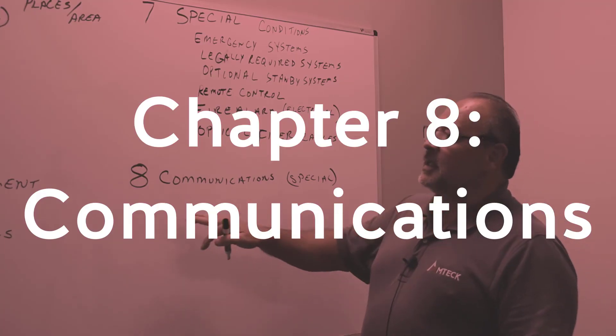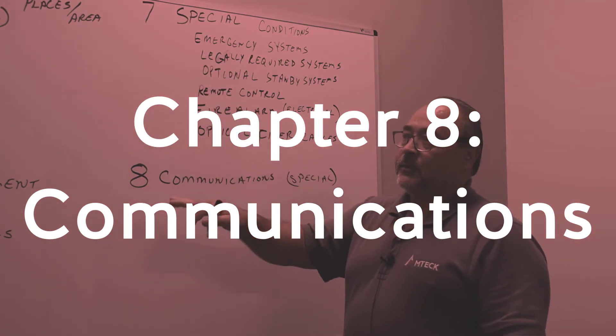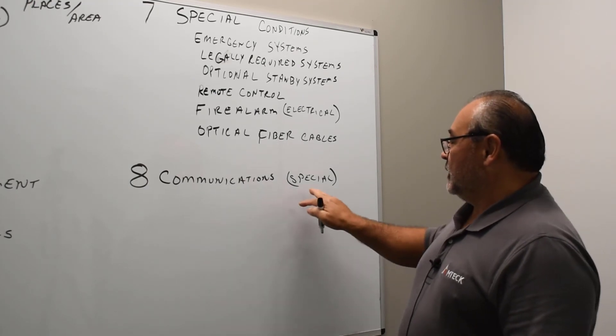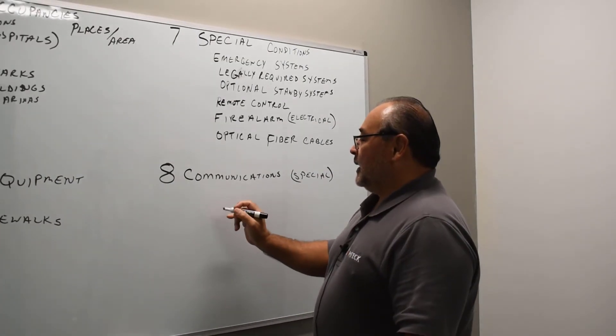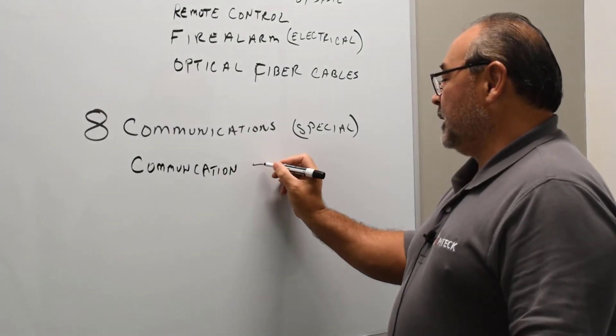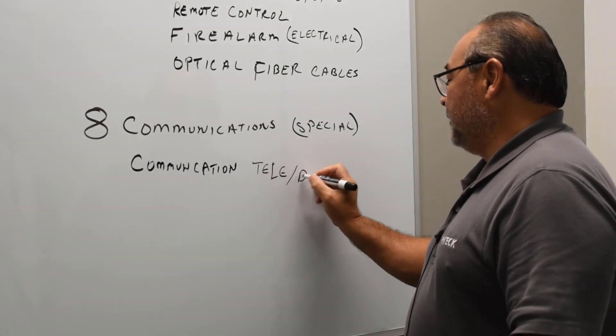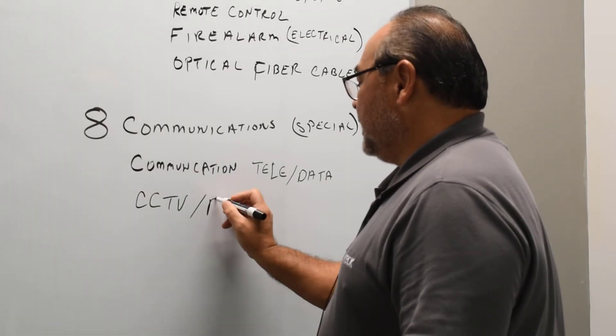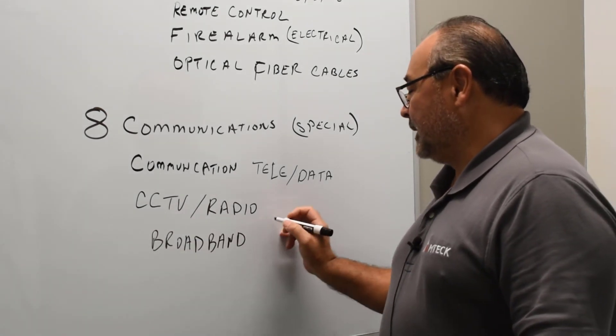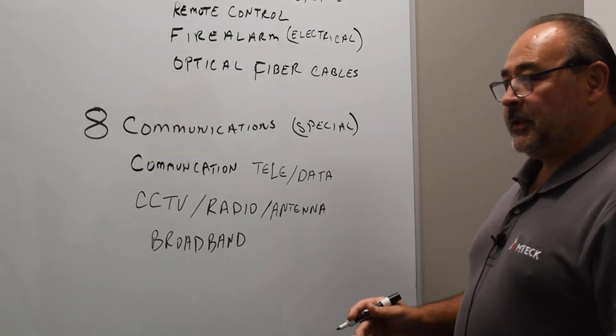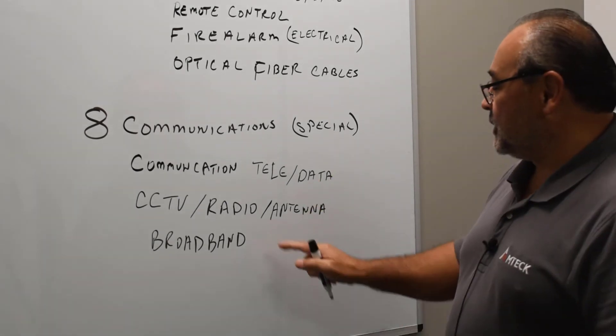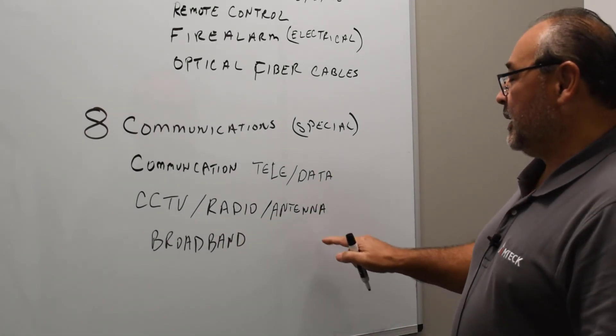Chapter eight stands alone. It does not associate itself with any of the chapters in the code. Communication systems or communications, kind of especially of our trade, we can kind of identify it like this. We've got communication, which encompasses what we think of teledata. But also we got CCTV and we got radio. Then we got broadband. And then when we talk about radio, we got the antenna. Everything associated with a communication system where we transmit and receive. We got receiving stations, we got transmitting stations, all to do with CCTV, radio and antenna stuff.